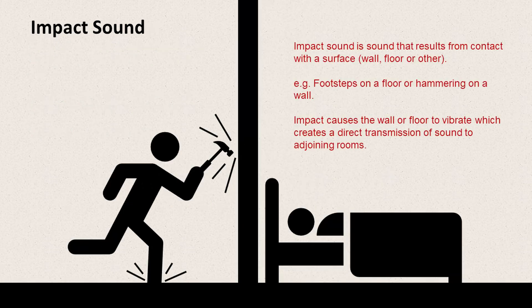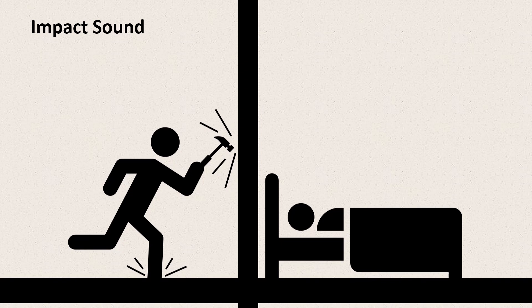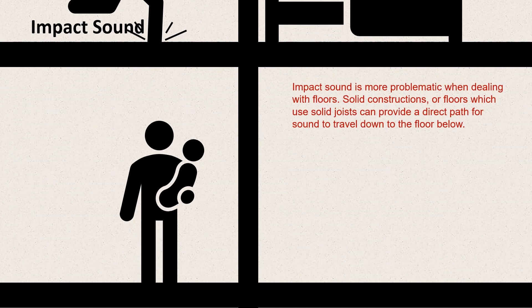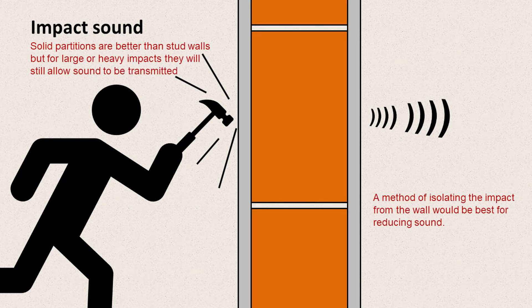The other type of sound is impact sound, which results from contact with a surface — footsteps on a floor or hammering on a wall. Impact sound causes the wall or floor to vibrate, creating a direct transmission of sound to adjoining rooms. Impact sound is more problematic when dealing with floors; solid constructions or floors using timber joists can provide a direct path for sound to travel through to the floor below, particularly if there is a bare timber floorboard above. A stud wall provides pretty much a straight path right through the plasterboard, stud, and plasterboard on the other side, so a standard stud wall lacks the density to deal with most impact sounds. Solid partitions are better than stud walls, but for large or heavy impacts, they will still allow sound to be transmitted.